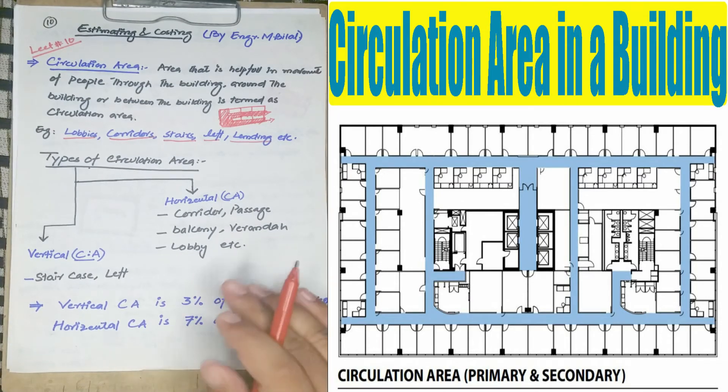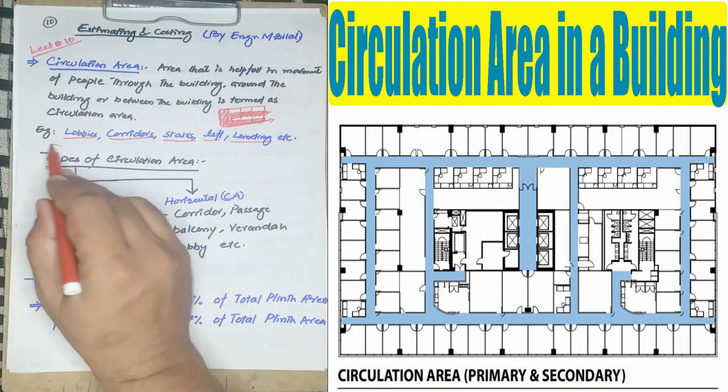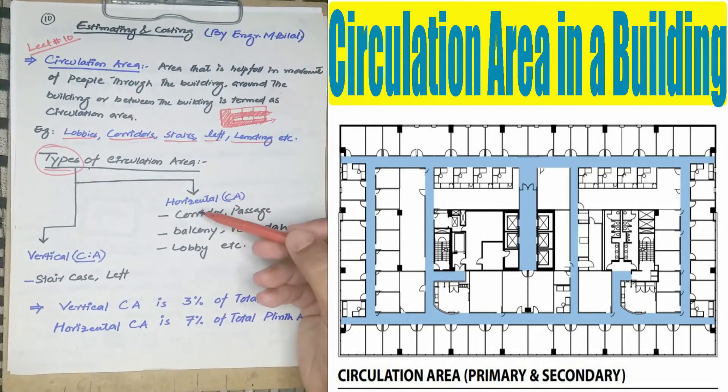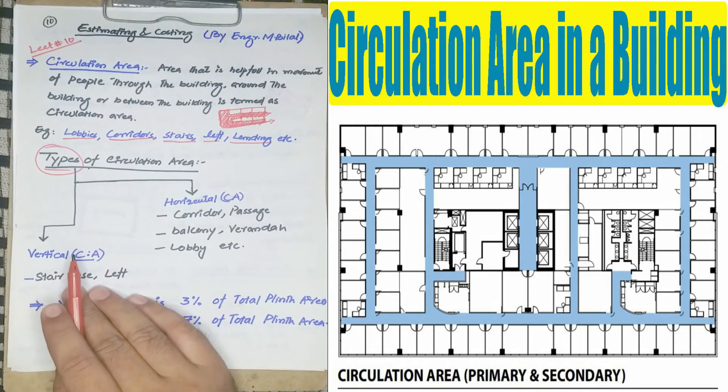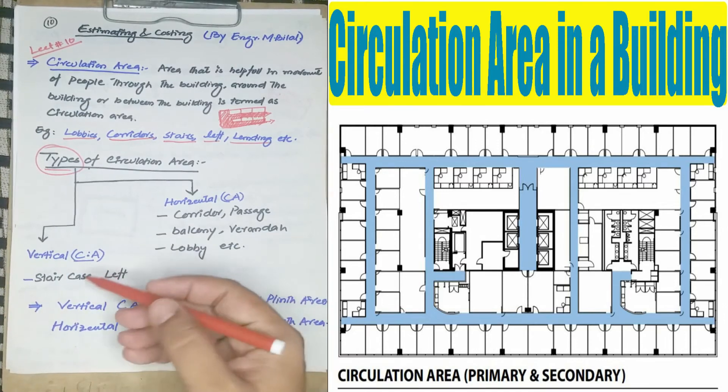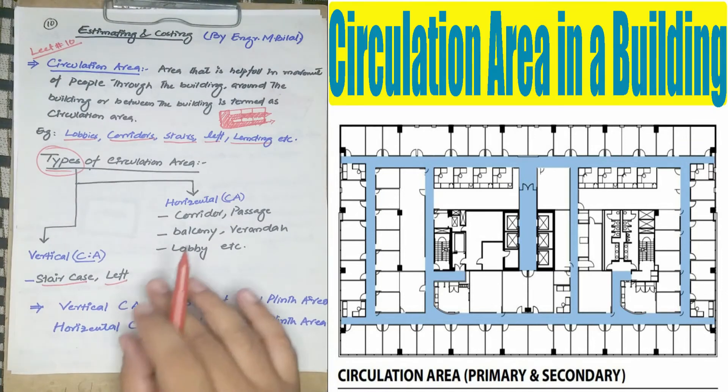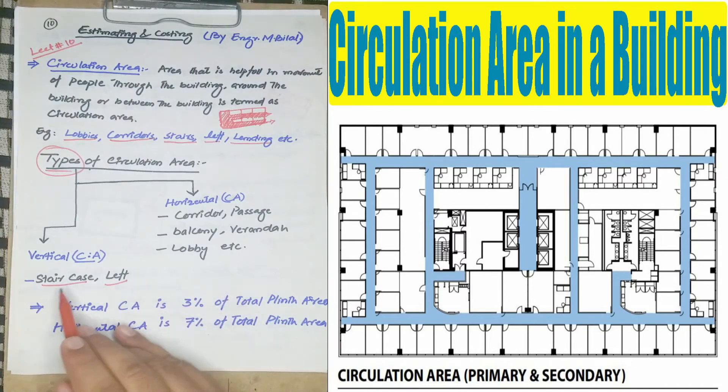So what are the main types of circulation area? The main types of circulation area are horizontal circulation area and vertical circulation area, means staircase and lift. Staircase and lift are the vertical circulation area because the stair helps us for movement vertically, as well as the lift also helps us for vertical movement.